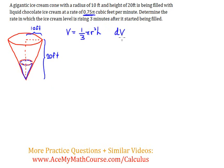That will be dv over dt. It's the rate with respect to time in which the volume is increasing, so 0.75 pi. The question is, determine the rate in which the ice cream level is rising. So the rate in which the ice cream level is rising.